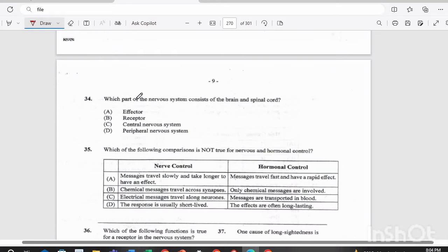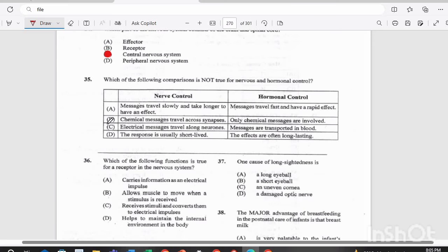Item 34. Which part of the nervous system consists of the brain and spinal cord? A, the effector, B, the receptor, C, the central nervous system, or D, the peripheral nervous system? Answer there would be C, the central nervous system.